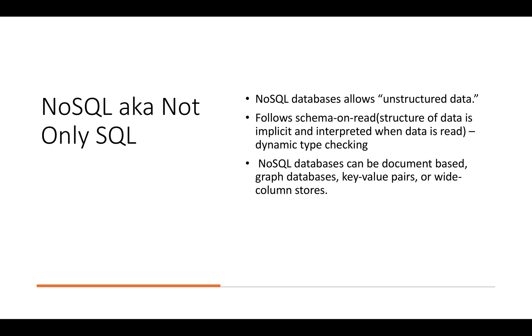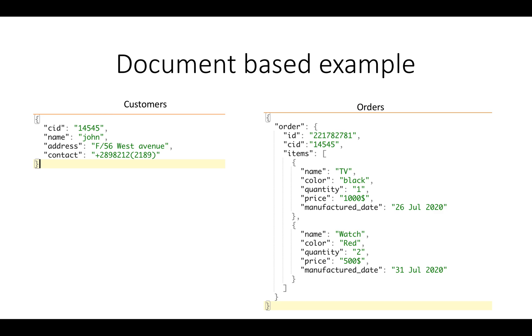NoSQL databases can be document based, graph databases, key value pairs or wide column stores. Now let's take the previous example where we are storing the information of customer in a document and the information of orders in a separate document which stores the items and the customer ID which points which customer has placed the order.